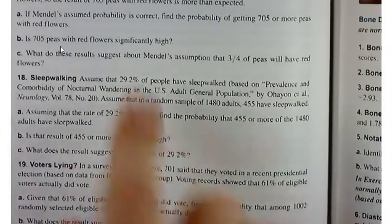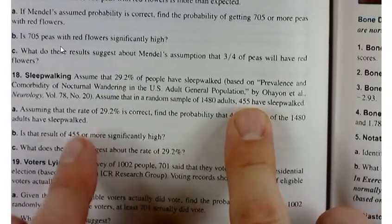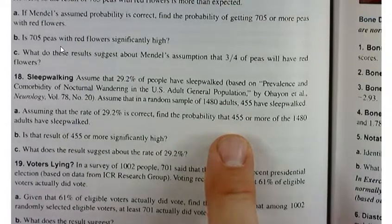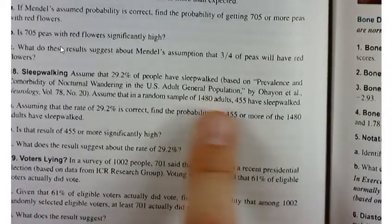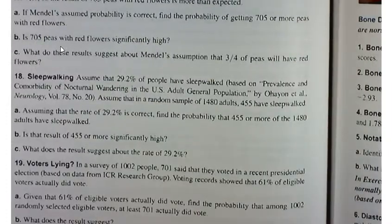So it says 29.2% of people have sleepwalked and we're going to look at a sample of, excuse me, not a sample of 455, we're going to look at a sample of 1480 and find the probability that at least 455 have sleepwalked.